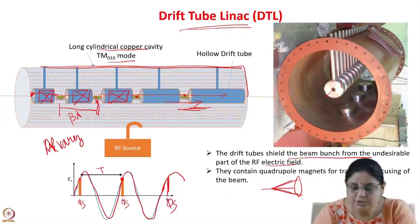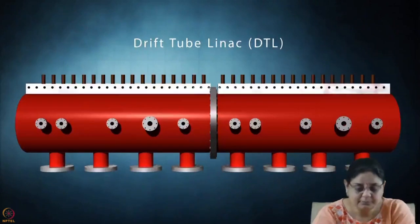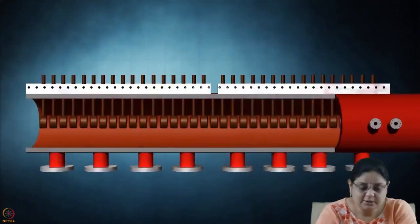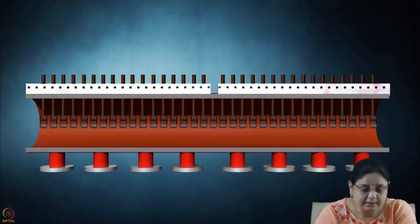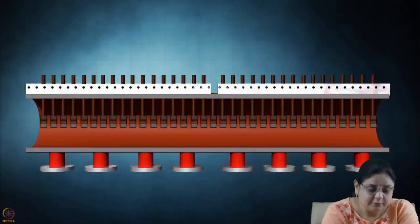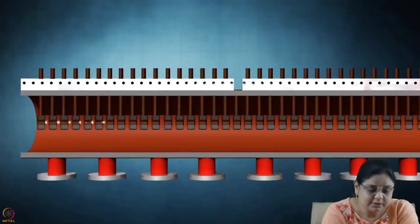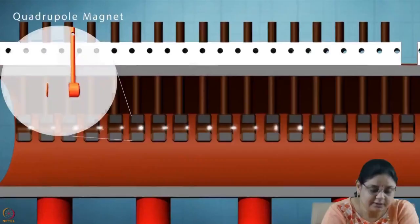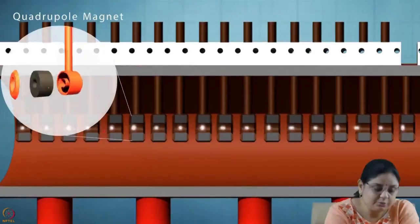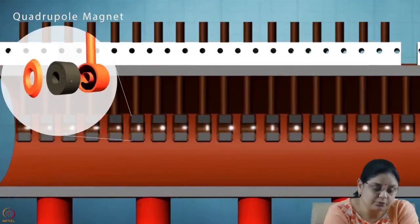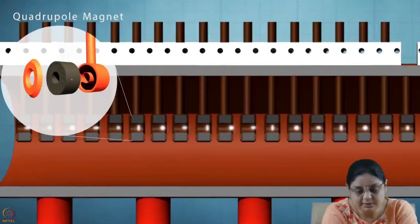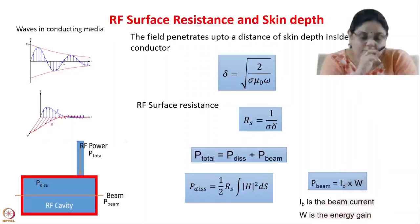Let us see an animation of the drift tube linac. This is the tank and these are the drift tubes. The beam gets accelerated in the gaps, and the drift tubes contain magnets used for focusing the beam in the transverse direction. Now regarding boundary conditions — when we said the tangential component of electric field is zero or the normal component of magnetic field is zero, this assumes a perfect conductor.